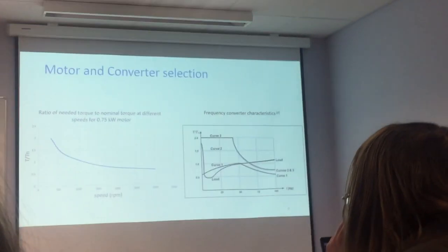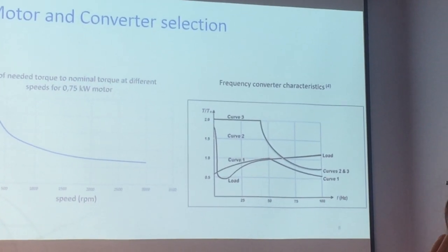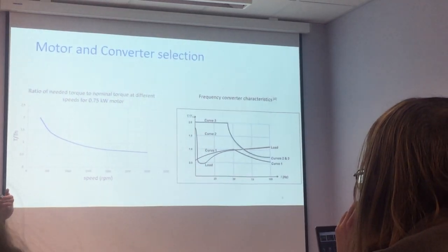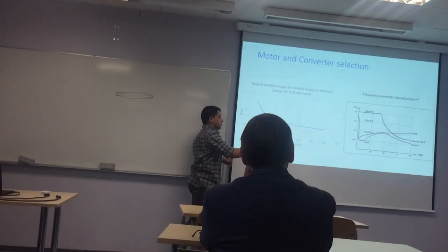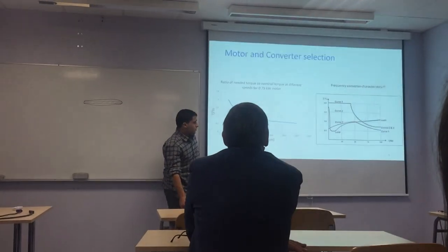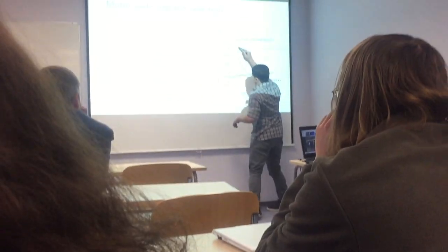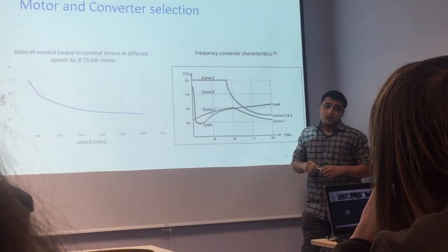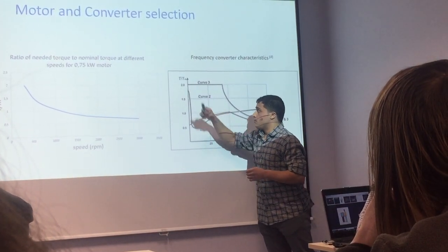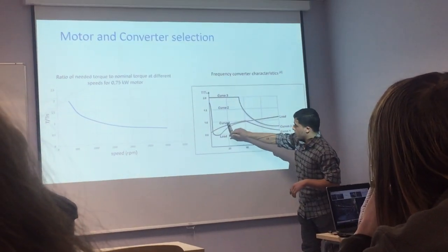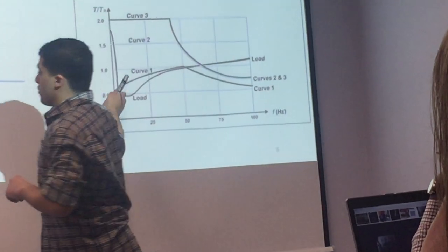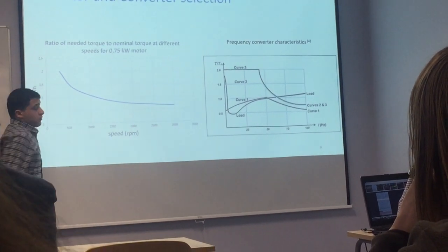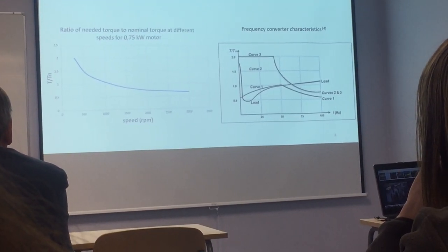Now we select the motor and frequency converter. Simply choosing a 0.75 kW motor for 450 watts wouldn't work. If we plot the needed torque over nominal torque against speed, and overlay the frequency converter drive characteristics — which show the ratio of available torque to nominal torque against frequency — we find that for a 0.75 kW motor, testing can only start from around 2000 rpm, which doesn't meet the design requirement of starting at 500 rpm.